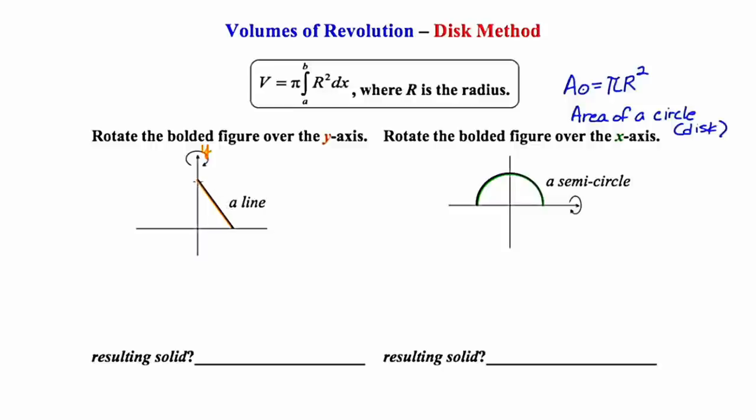Imagine taking this line and pivoting it around this y-axis. A certain solid is going to result, and you have to anticipate what that's going to look like. As it dips down to the right, once we spin it, it's going to dip down to the left like this. To give it some dimension, I'm going to add some ovals. Once you do this, you might have a better sense of what solid you're looking at. This happens to be a cone.